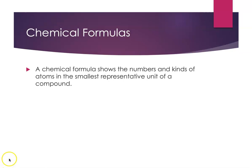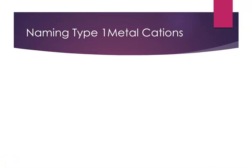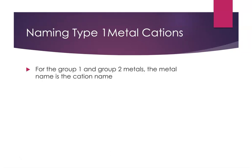We're going to start by learning how to name Type 1 metal cations. Type 1 just means it's an ion that only has a single charge — that element, when it forms an ion, just does one thing. The group 1 metals and the group 2 metals form Type 1 metal cations, which means they only form one charge each. For these elements, the metal name is the name of the cation as well.